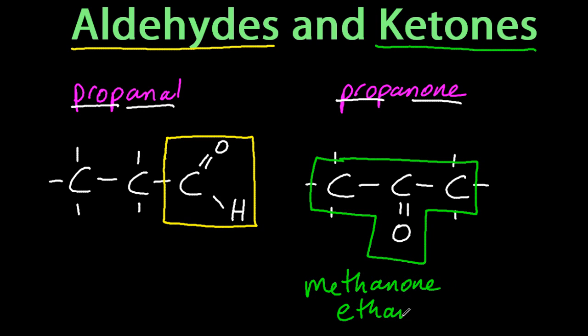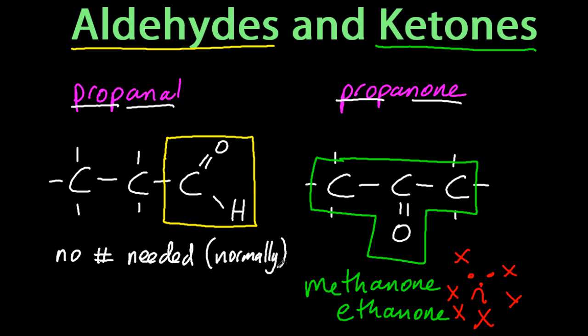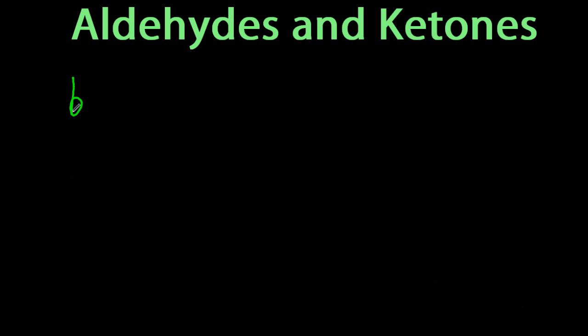So methanone and ethanone, well they don't exist. Because you need three carbons in a row for a ketone, with the oxygen double bonded to the center. And with the aldehydes, normally I don't need a number because an aldehyde has to be at the end of the chain. So in SL chemistry, you probably won't be needing a number.